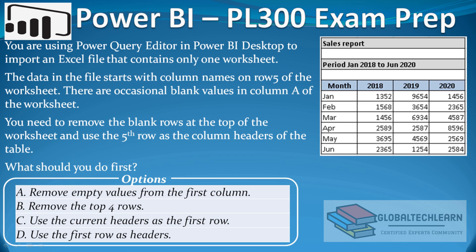The question is: you are using Power Query Editor in Power BI Desktop to import an Excel file that contains only one worksheet. The data in the file starts with column names on row 5 of the worksheet. There are occasional blank values in column A. You need to remove the blank rows at the top of the worksheet and use the 5th row as the column headers of the table.